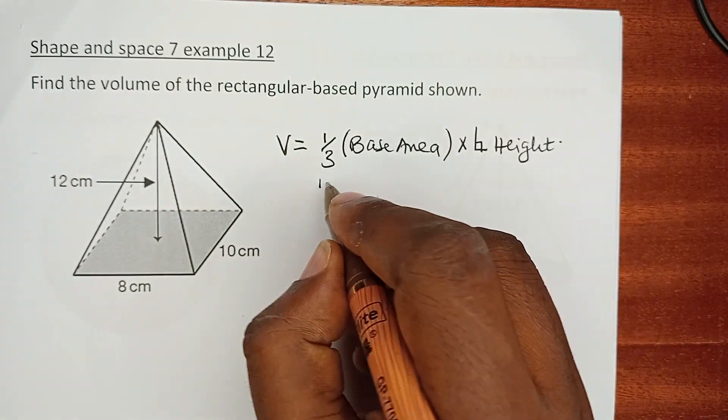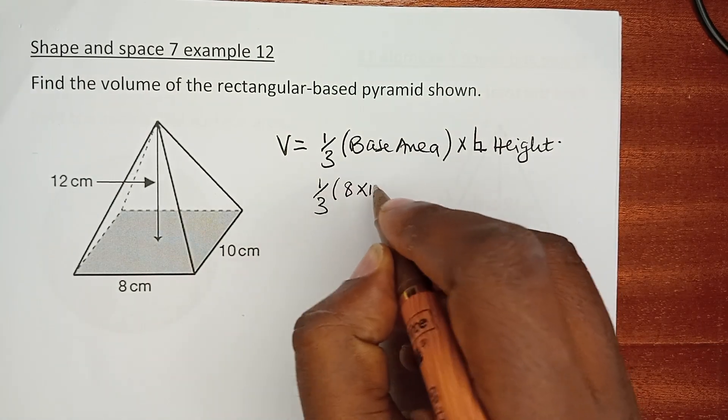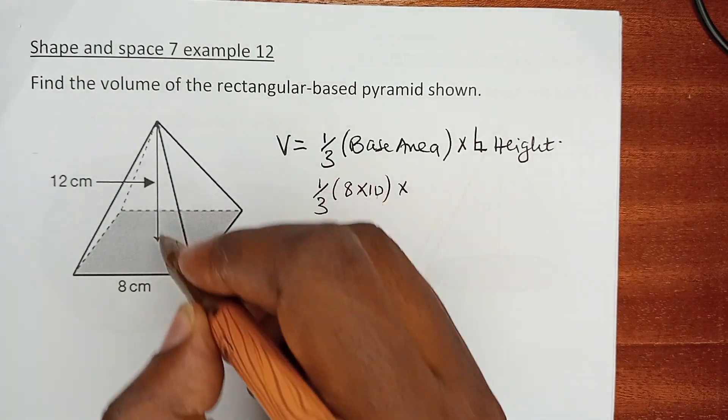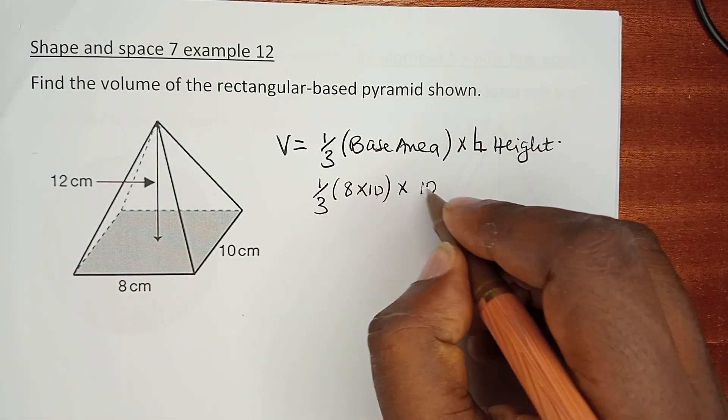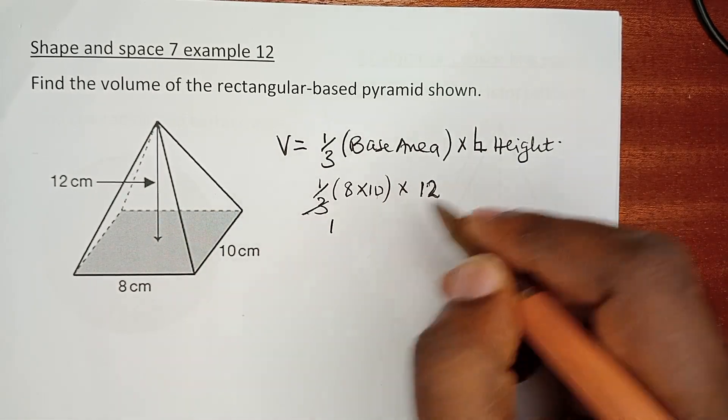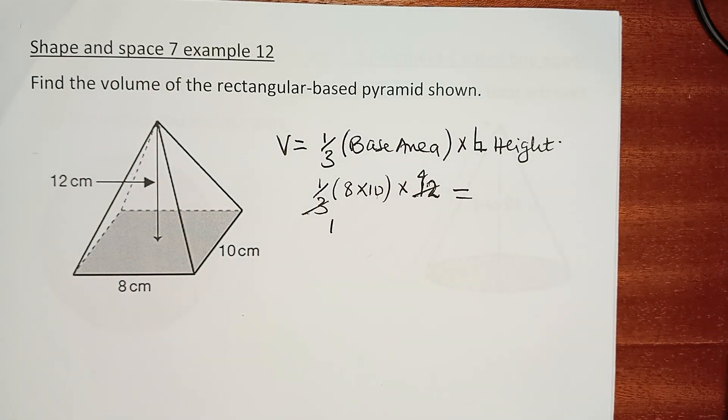In this case we have a third of 8 times 10 multiplied by the perpendicular height, which has already been calculated for us, multiplied by 12. You can already see this is 1 by 3.